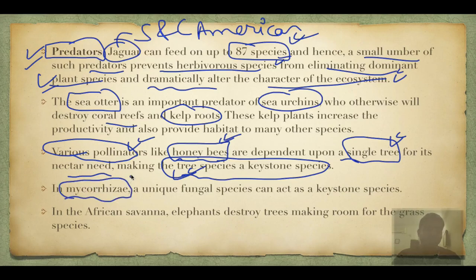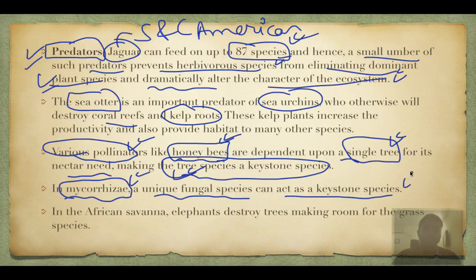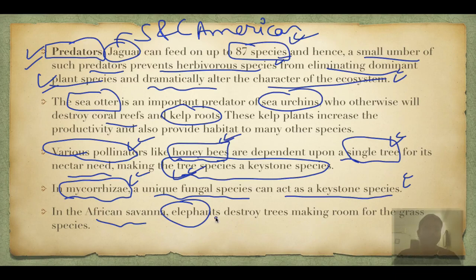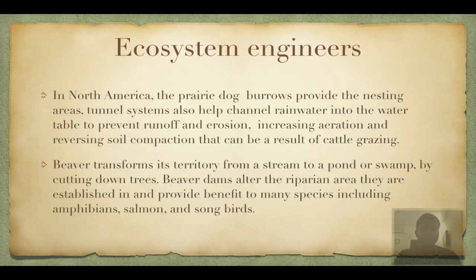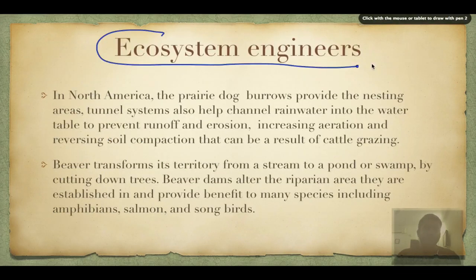A single tree species that honeybees depend on for nectar automatically becomes a keystone species too, even if not large. Mycorrhiza — a microscopic fungal species — helps higher plant roots absorb nutrients from soil; if removed, the entire ecosystem collapses. In African savannah, elephants destroy trees and convert areas into grasslands — if elephants are removed, the grassland converts into forest ecosystem.